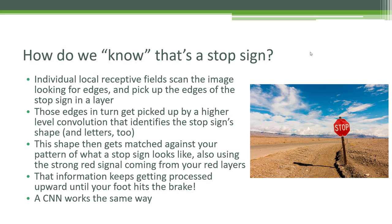So how does your brain know you're looking at a stop sign? You have individual local receptive fields scanning your image, overlapping each other looking for edges. Your brain is very sensitive to contrast and edges — that's why letters on a slide catch your attention due to high contrast with the background. At a low level you're picking up the edges of the stop sign and the letters on it. A higher level takes those edges and recognizes the shape — an octagon — or that the letters form the word 'stop.' Ultimately that gets matched against whatever classification pattern your brain has for a stop sign, so no matter which receptive field picked it up, at some layer it will be recognized.